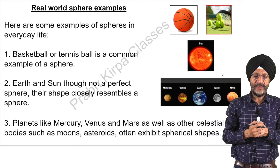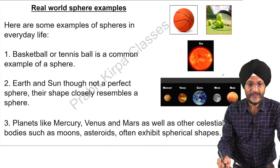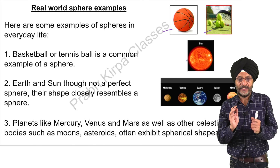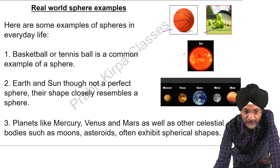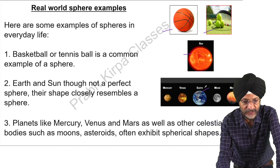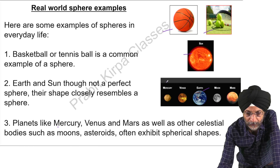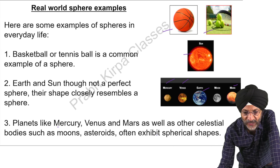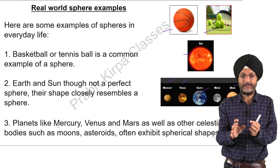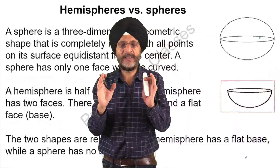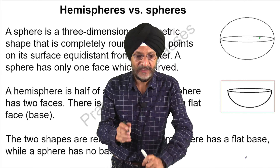Now, the properties of a sphere. A sphere is symmetric with respect to its centre. It means that any line passing through the centre divides the sphere into two equal halves. You can see that if we cross a line through the centre, it will divide this sphere into two equal halves. Any point on the surface of the sphere is equidistant from the centre. A sphere has a smooth continuous surface with no edges or vertices — it does not have a pointy surface.